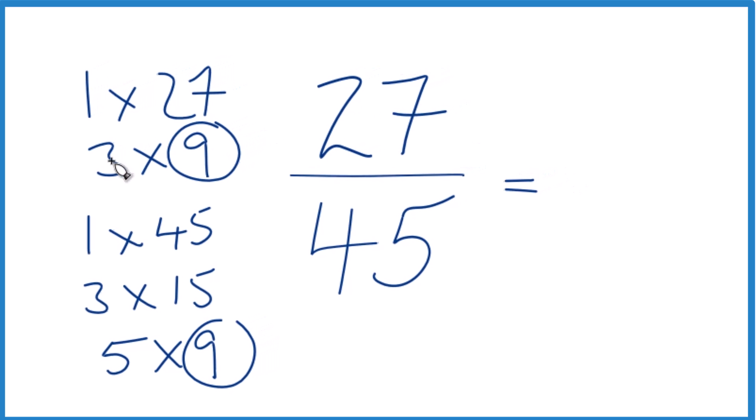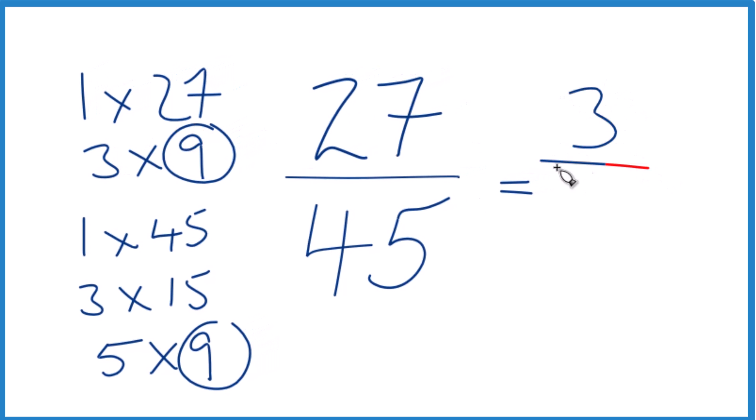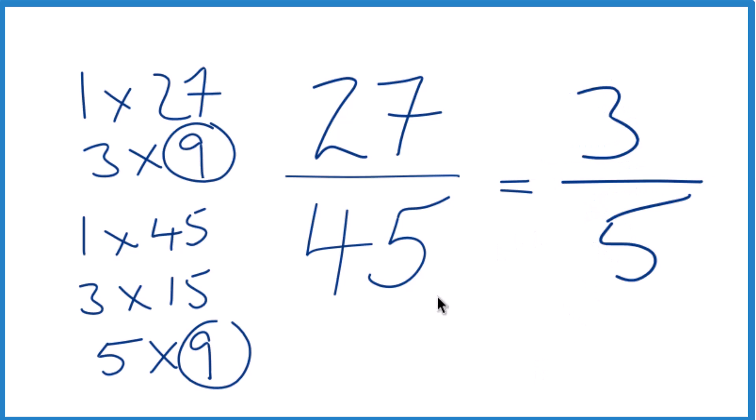27 divided by 9 is 3. 45 divided by 9, that gives us 5. So we end up with the fraction 3/5. So in answer to our question, when we simplify 27/45, we get 3/5, and we can't reduce this any further, it's in simplest terms.